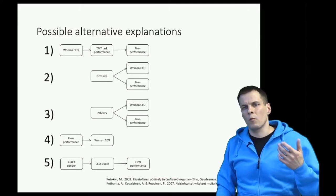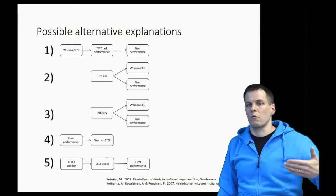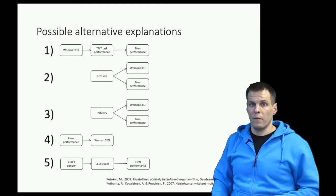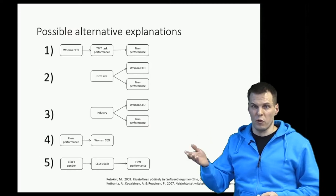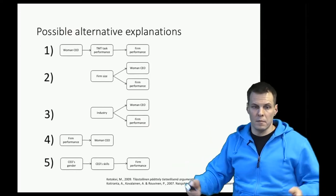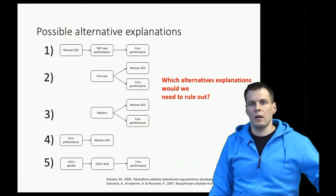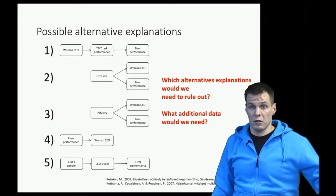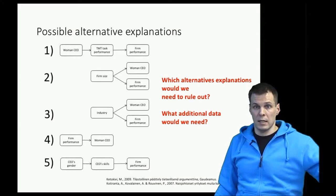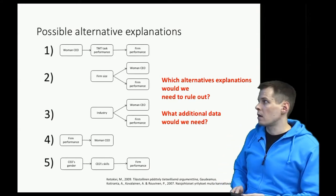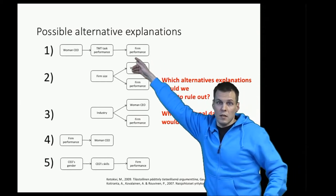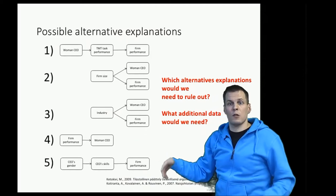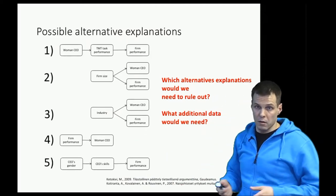We need to consider which of these explanations are most relevant and collect additional data accordingly. Beyond CEO gender and profitability, we need data to rule out alternative explanations. Industry is easy to obtain, as is company size. Top management team performance and individual skills are more difficult to measure. It's a trade-off between what data is easily available and what we actually need.